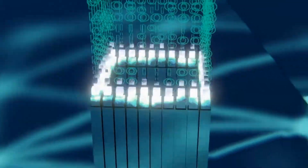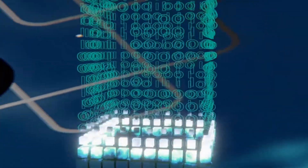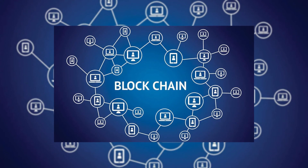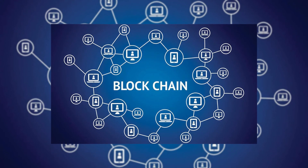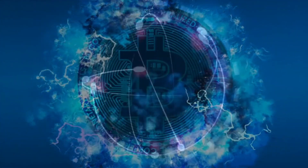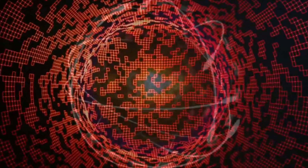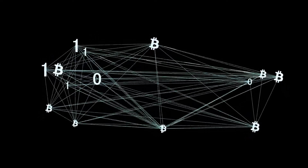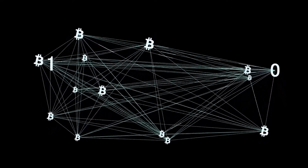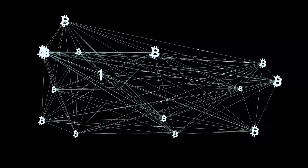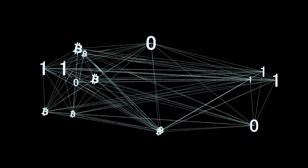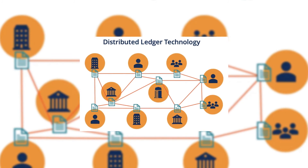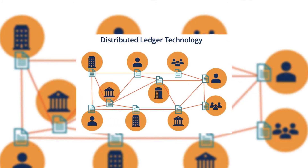Blockchain technology is the tech behind Bitcoin and other cryptocurrencies. Let's find out what blockchain is and how it works. Bitcoin is the best-known cryptocurrency — the one for which blockchain technology was invented. A cryptocurrency is a medium of exchange, such as the US dollar, but it is digital and uses encryption techniques to control the creation of monetary units and to verify the transfer of funds. Blockchain, also known as Distributed Ledger Technology or DLT, can be seen as a public ledger with copies spread out over multiple locations called nodes.